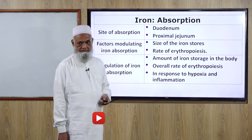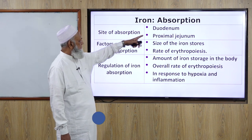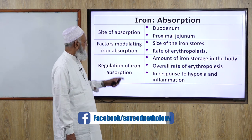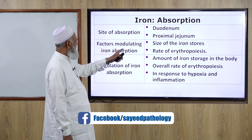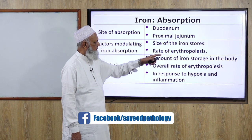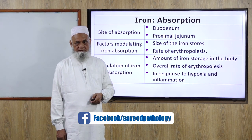Iron absorption occurs in the duodenum and proximal jejunum. Factors modulating iron absorption include the size of iron stores and the rate of erythropoiesis, as well as the overall rate of erythropoiesis in response to hypoxia and inflammation.